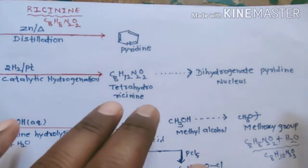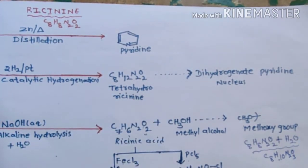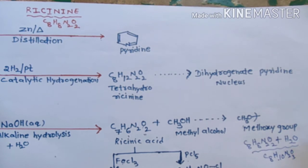Hello students, in this video I want to explain the structure elucidation of ricinine. Ricinine is an alkaloid that is obtained from castor oil. The formula of ricinine is C8H8N2O2.